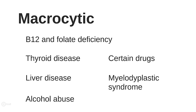Anemia with a high MCV is macrocytic anemia. Causes include B12 or folate deficiency — also referred to as megaloblastic anemia — thyroid disease, liver disease, alcohol abuse, certain drugs such as methotrexate and azathioprine, and myelodysplastic syndrome, which can cause a macrocytic or normocytic anemia.